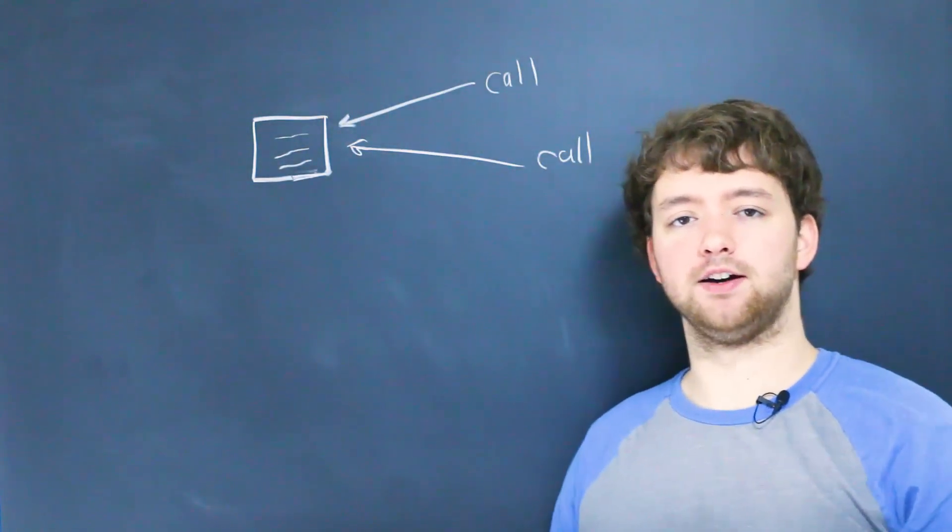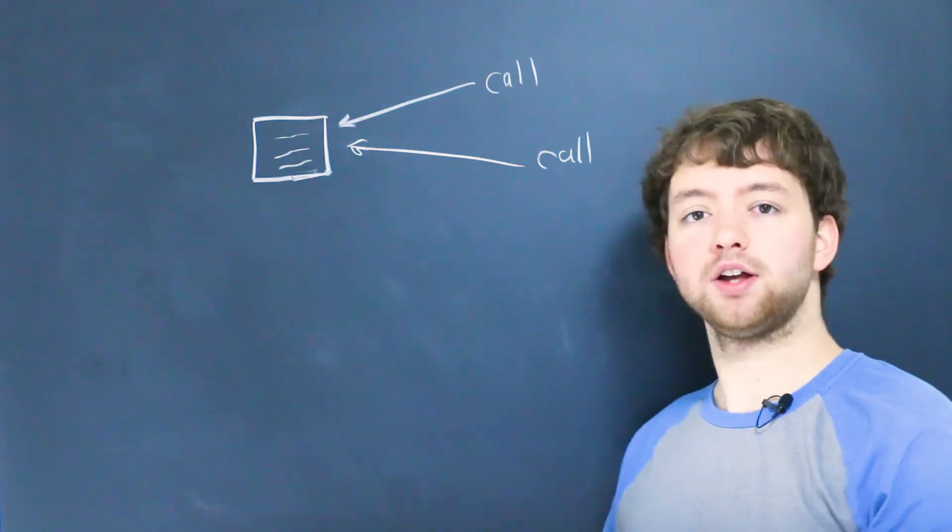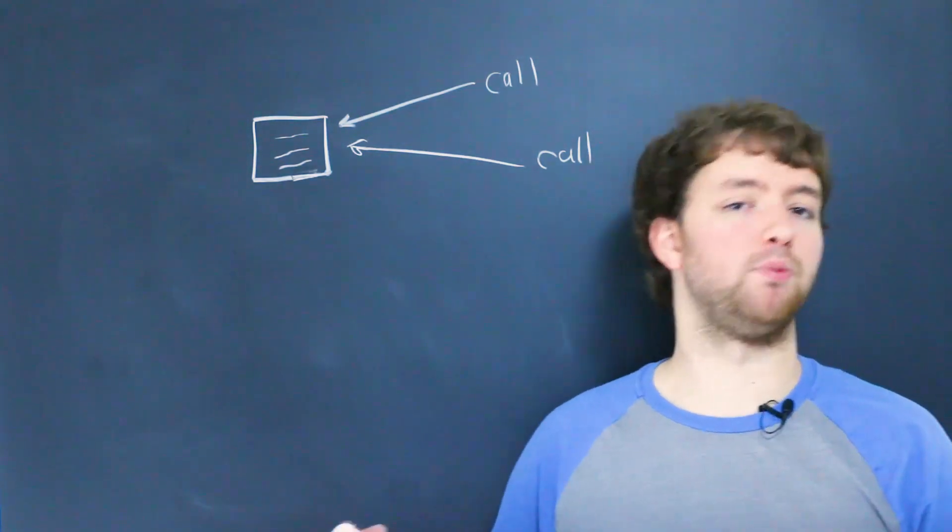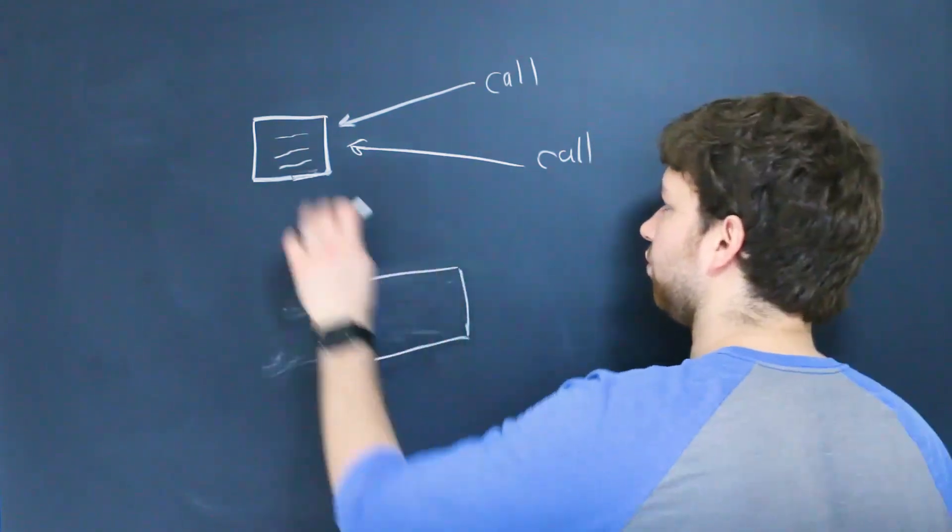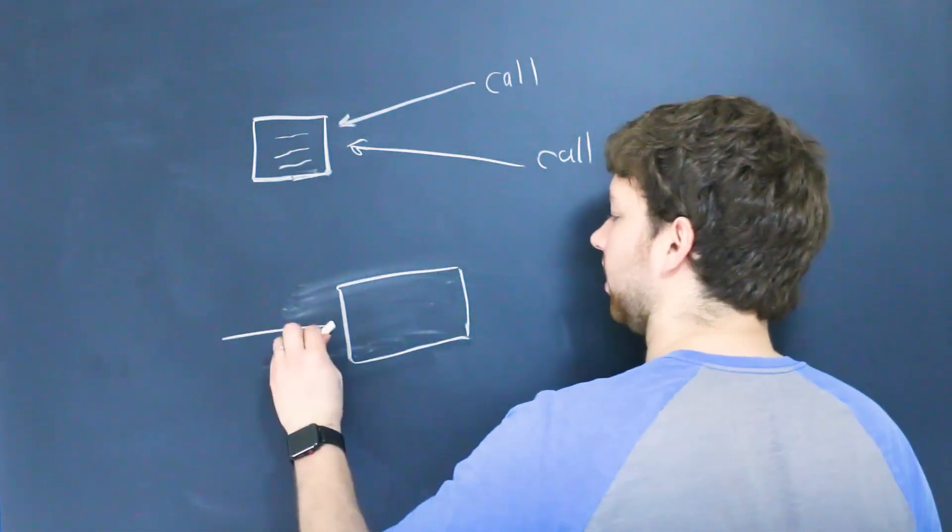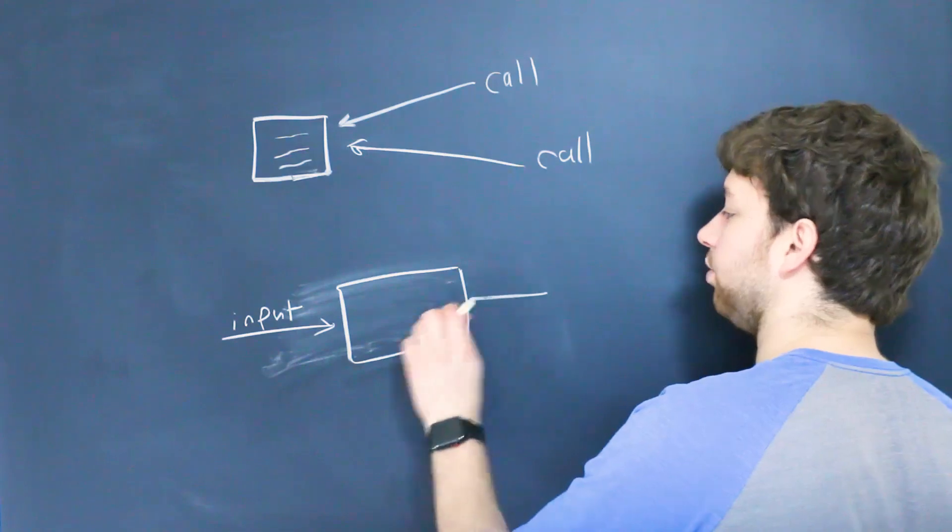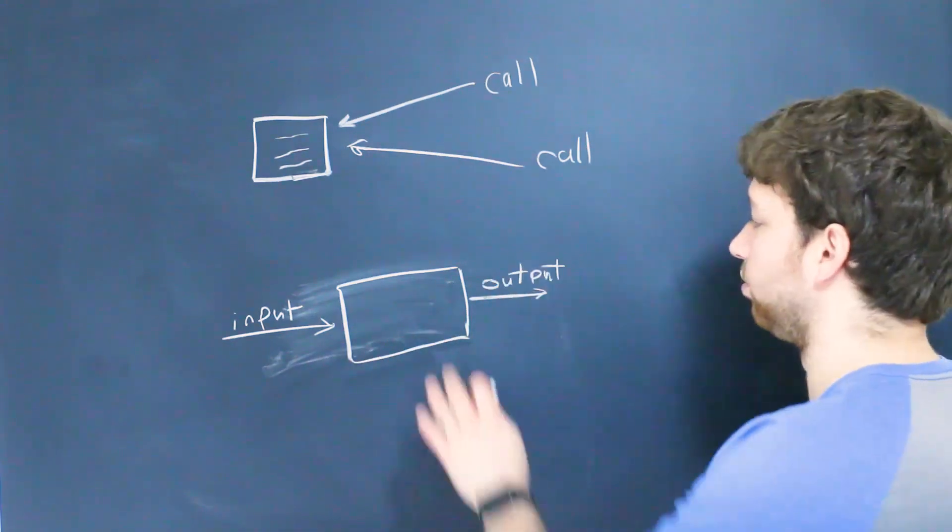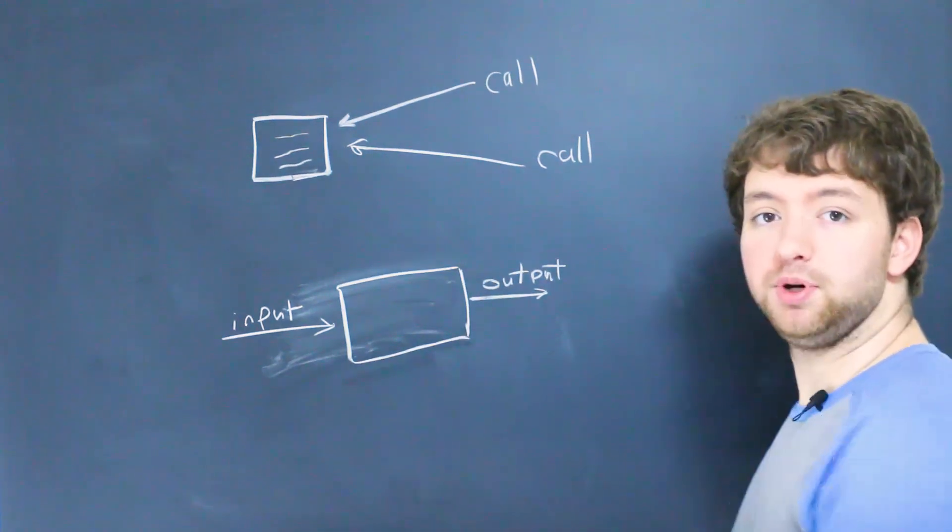So you can think of a function as a process that will sometimes take an input and sometimes give an output. So it's kind of like this. So if we zoom in on that a little bit, we can get input, and it'll do something with that input, and then it will return an output.